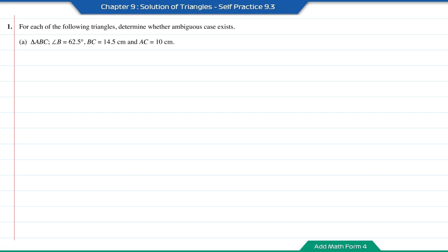The length BC is 14.5 cm and AC is equal to 10 cm. For this incomplete triangle, I'm going to label this as the angle B, which is 62.5 degrees. And for this point here, I'm going to label this as C. This length here will be 14.5 cm. We have another point, which is the point A.